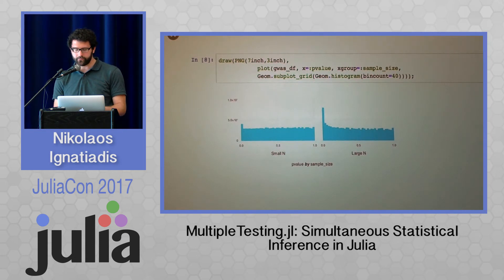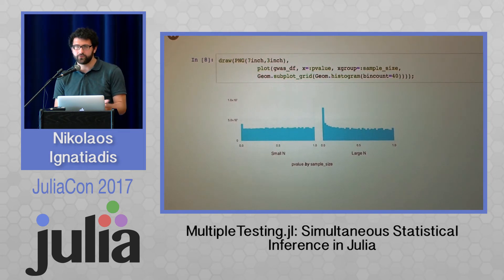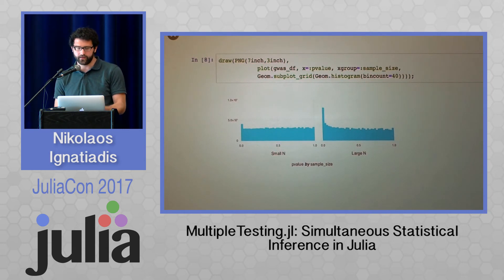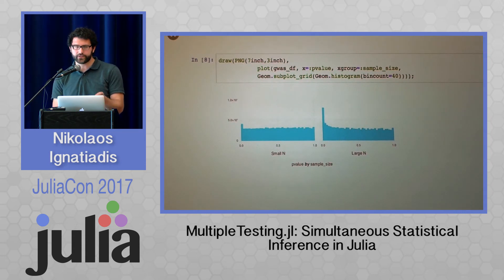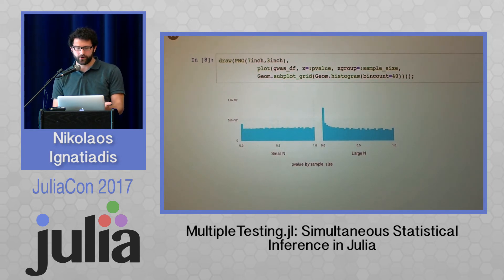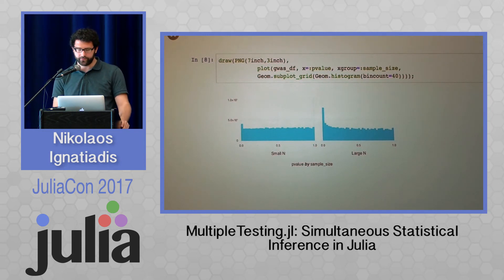To illustrate this heterogeneity, I split the dataset of p-values into two groups based on available sample size. On the left you see a histogram of the 50% with the smallest sample sizes — basically a uniform histogram, with nothing to detect. From basic statistical theory, we know that if the sample size is too low, we won't have power to detect anything. On the right, we see a very strong peak to the left — so there we have a lot of power to detect things. In our multiple testing problem, we are penalizing ourselves too much by treating both groups the same.